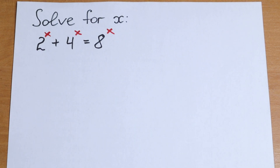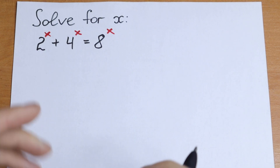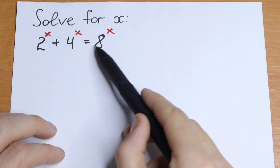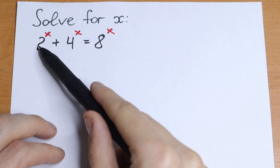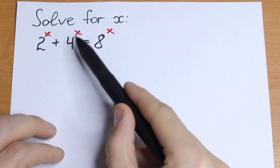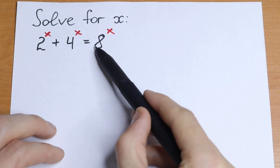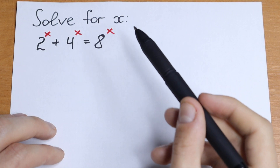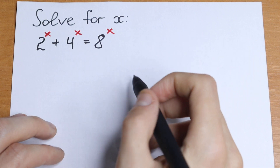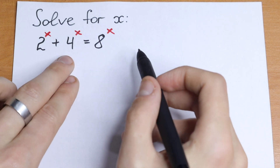Hello everyone, welcome back to Maths Mood. Today we have an interesting equation. We need to solve this equation for x. We have 2 to the power x plus 4 to the power x equal to 8 to the power x. And how can we solve this equation? Take a look.